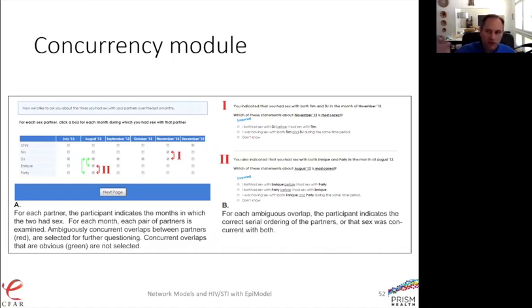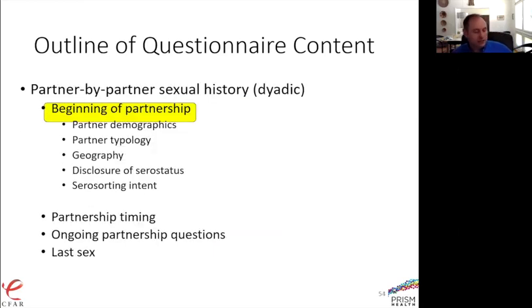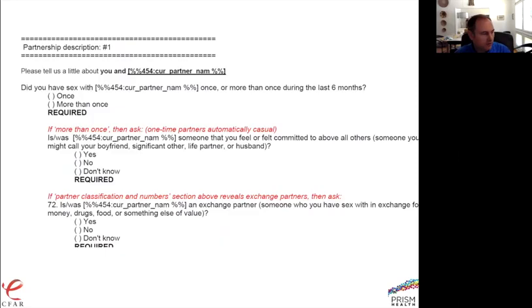This grid approach makes it an accessible item — people can indicate who they had sex with in which months, and we can determine whether those patterns were concurrent or not. In the partner-by-partner dyadic section, for each partner we ask about their race, age, whether they're a main or casual partner, whether serous status was discussed. For example: 'Tell us a little bit more about you and Chris — did you have sex with Chris more than once during that period? Is he someone you feel committed to above all others? Is he someone you had sex with in exchange for money, food, drugs, or something else?'